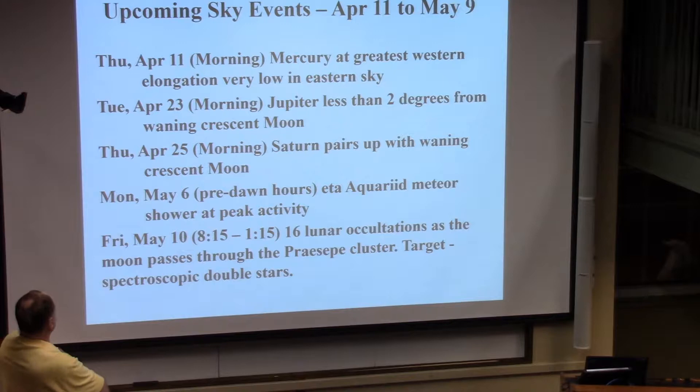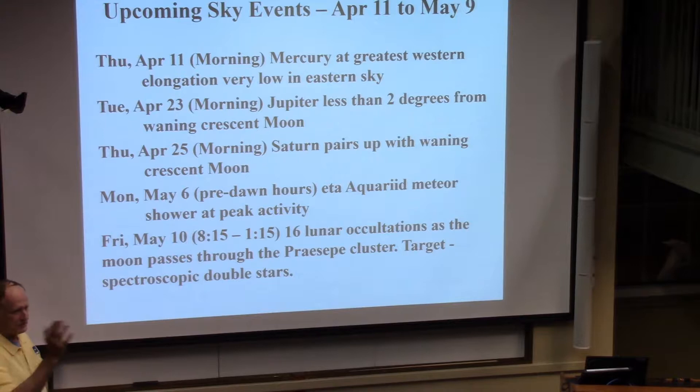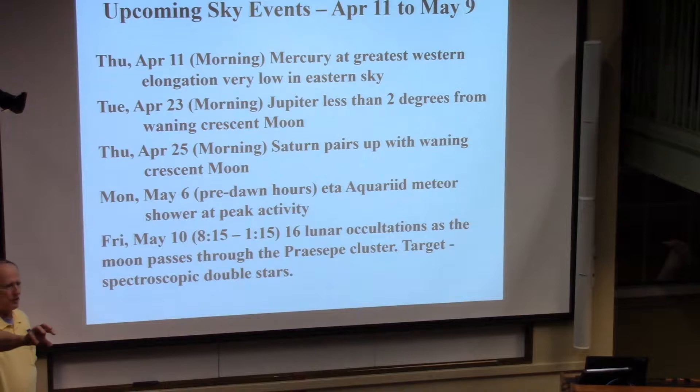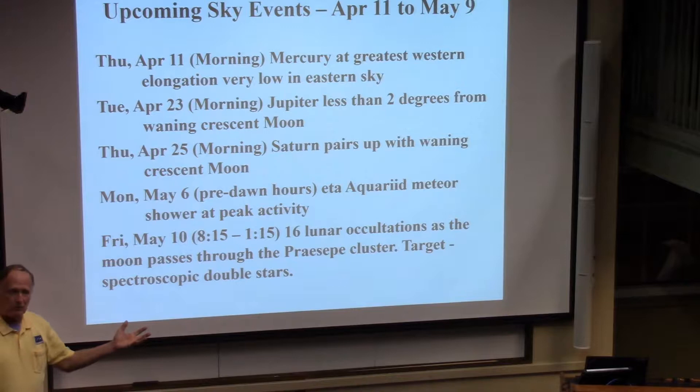A few days later, Saturn's going to pair up with the waning crescent moon. This is a great opportunity for beginners who don't know how to find things in the sky. We can all find the moon. So if it's next to a planet, that kind of makes it easy for them. On May 6th, the Eta Aquarid meteor shower is going to be at peak activity.